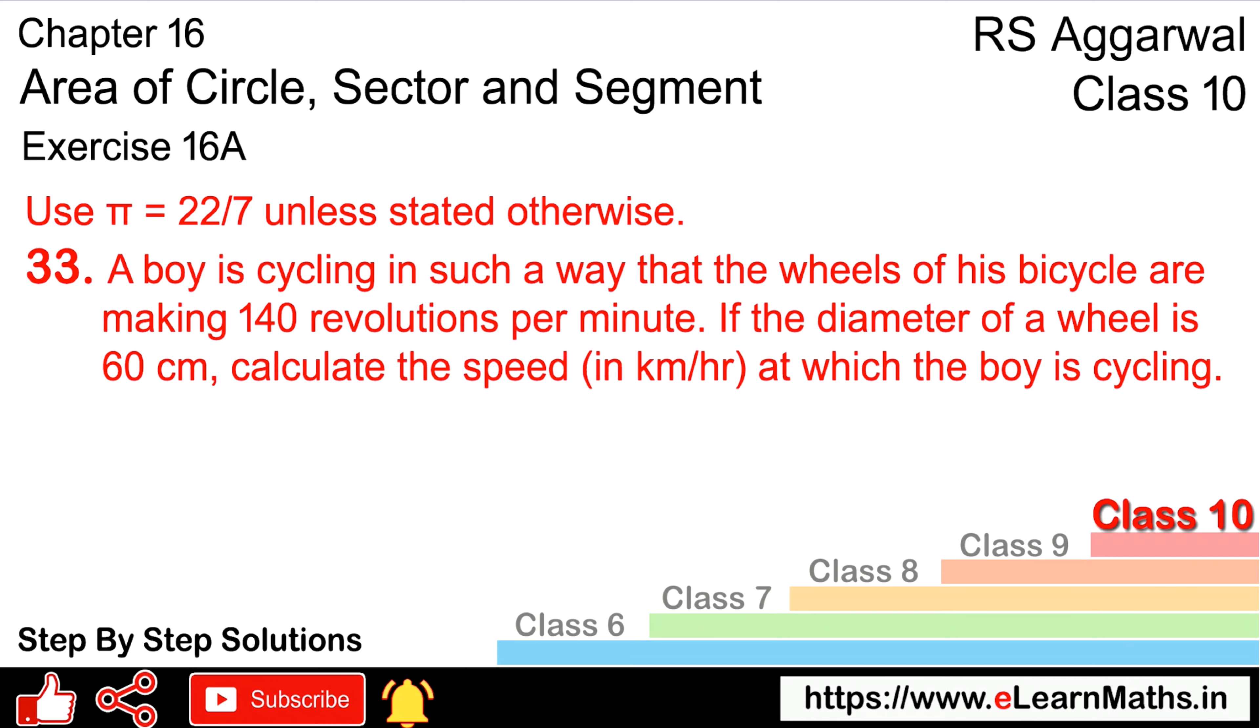That means in one minute the wheel is running 140 revolutions. If the diameter of the wheel is 60 cm, calculate the speed in km per hour at which the boy is cycling.